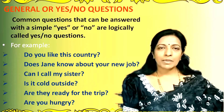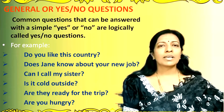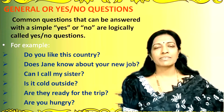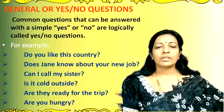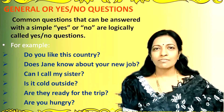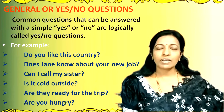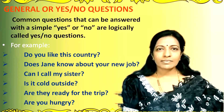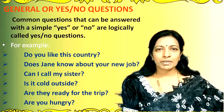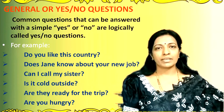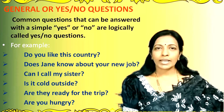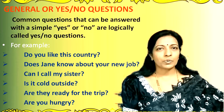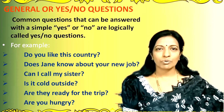Let us try to understand each one of these four types of questions and how they are different from each other. The first type, the general questions, are very commonly used. These questions which can be answered with a simple yes or no are logically called yes-no questions or general questions. For example, 'Do you like this country?' This is a simple question which can either be answered by 'Yes, I like this country' or 'No, I don't like this country.' Such questions are known as general questions or yes-no questions.